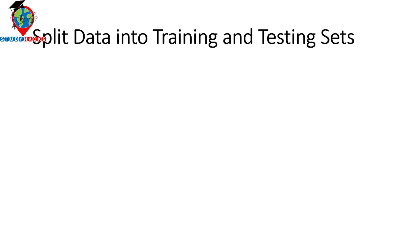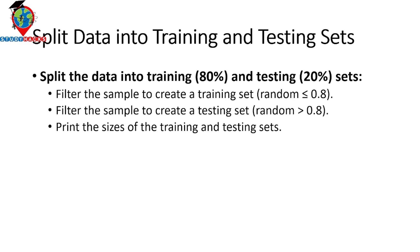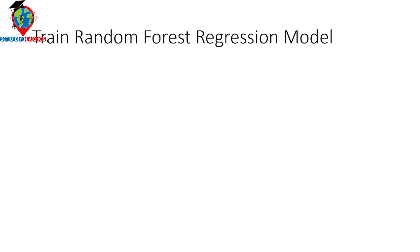Then split data into training and testing sets. In this tutorial I split the data into 80% training and 20% testing. This ratio will vary from project to project, but for my project I chose 80% data to train the model and 20% data to test the model. We also print the size of the training and testing datasets, and then train the random forest regression model.